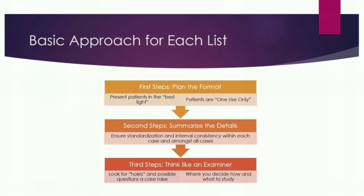The basic approach for each list: first, plan the format — present the patient in the best light. Patients are one use only. For example, if I delivered a lady and did her tubal, I can't put the tubal on the GYN list and the delivery on the OB list — they have to be combined. If I did her postpartum tubal ligation six weeks later, I would note on the OB case list, in the postpartum column, 'bilateral tubal ligation at six weeks postpartum,' combining both on the same patient.